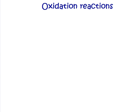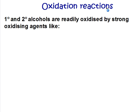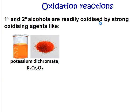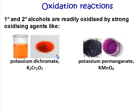Alcohols also undergo oxidation reactions. Oxidation reactions occur when extra oxygen is added into the molecule. Primary and secondary alcohols are both readily oxidised by strong oxidising agents, but tertiary alcohols don't react with oxidising agents. Examples of oxidising agents include potassium dichromate and potassium permanganate, both of which you've worked with before.